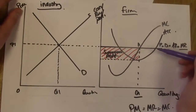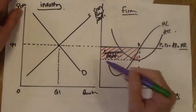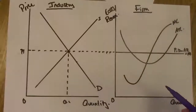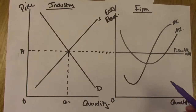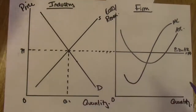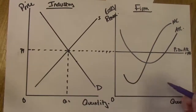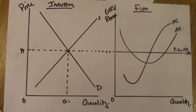All firms are profit maximizers and are attracted into an industry because of supernormal profits. Rather than redraw the supply and demand diagram, any changes made to this diagram will now be shown in green pen, so you can watch as we go through.